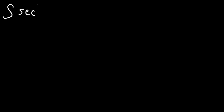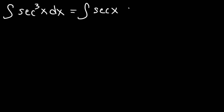In this lesson we're going to integrate secant cubed x dx. The first thing we need to do is split it into two parts. We're going to say secant x times secant squared x dx.